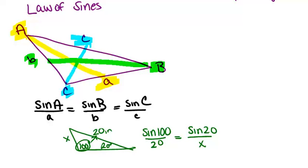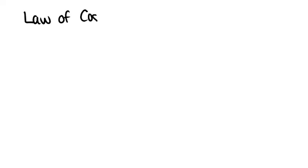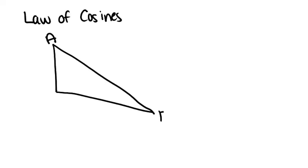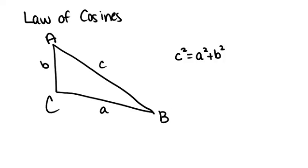Next we're going to talk about the law of cosines. The law of cosines also works for non-right triangles. Again, we set up a situation where we have angle A, B, and C, and sides A, B, and C such that they match up — angle A is across from side A, and so on. The law of cosines says that side C squared equals side A squared plus side B squared, which looks like the Pythagorean theorem, but then we subtract 2 times A times B times the cosine of angle C. It's like the Pythagorean theorem, but this term accounts for the fact that it's not a right triangle.